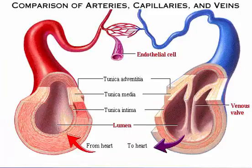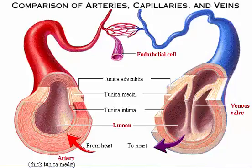Let's compare and contrast the three types of blood vessels: arteries, capillaries, and veins. Arteries are vessels that transport blood away from the heart. Because they are exposed to the highest pressures of any vessels, they have the thickest tunica media. The elastin allows them to stretch and recoil, and the smooth muscle allows them to constrict and dilate.